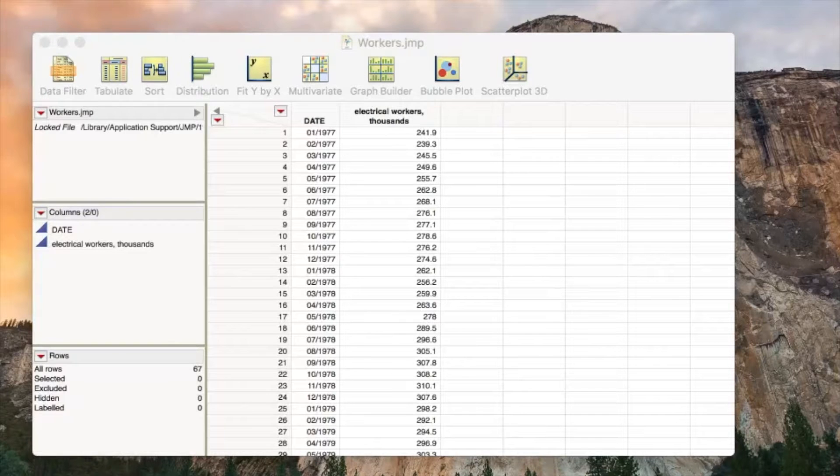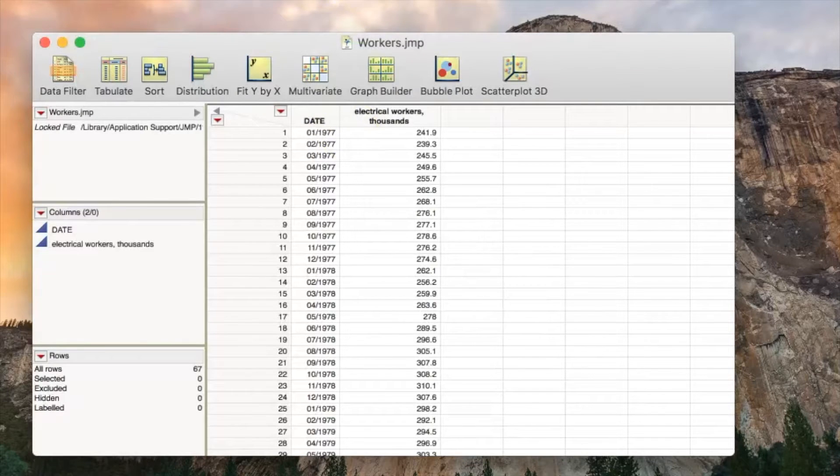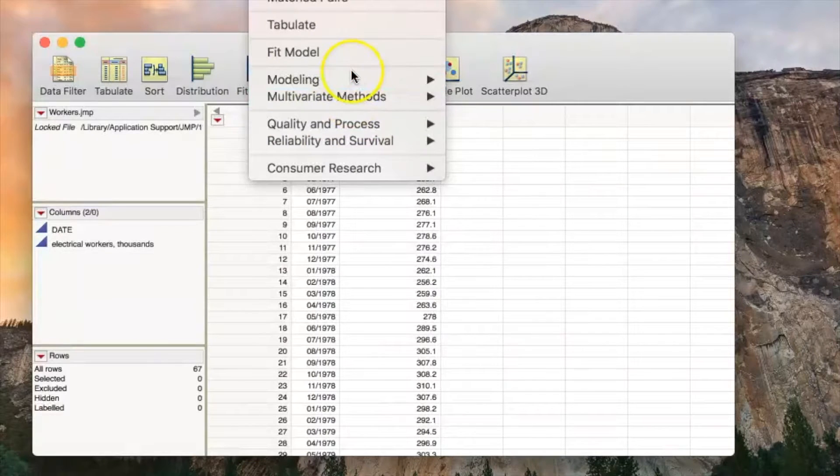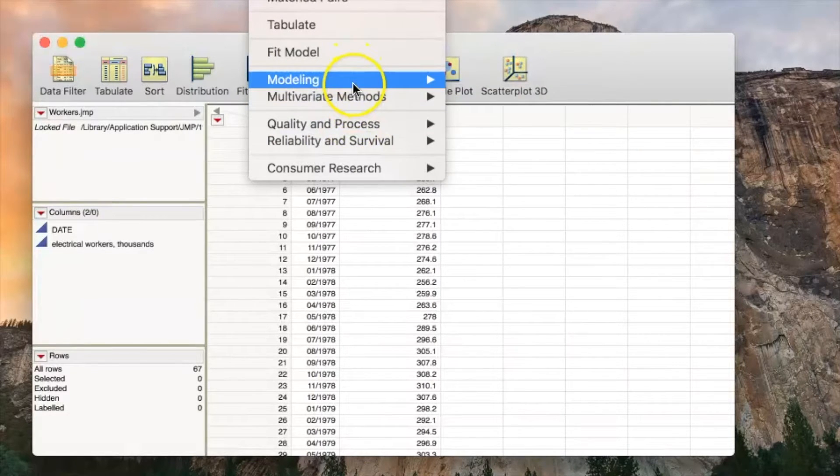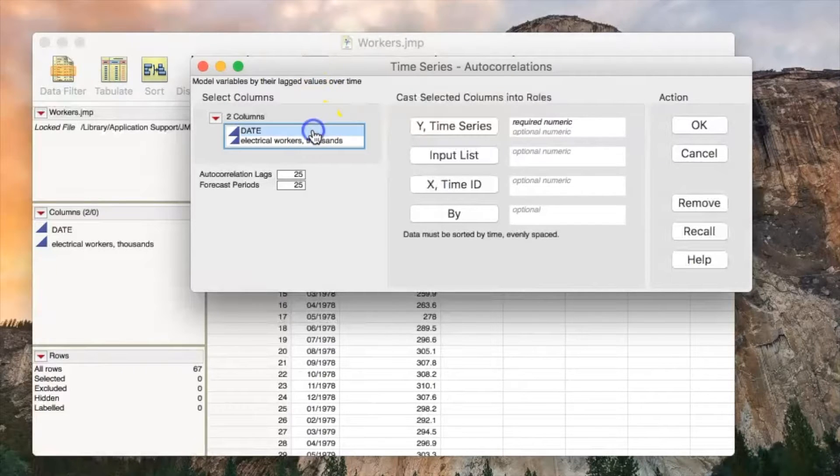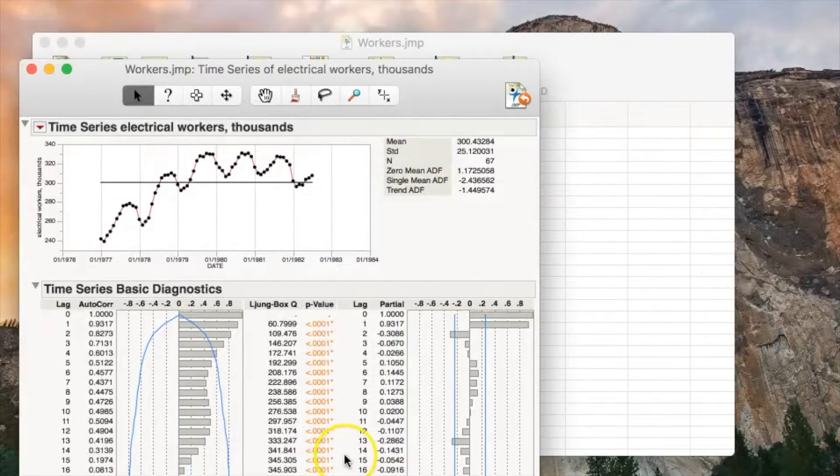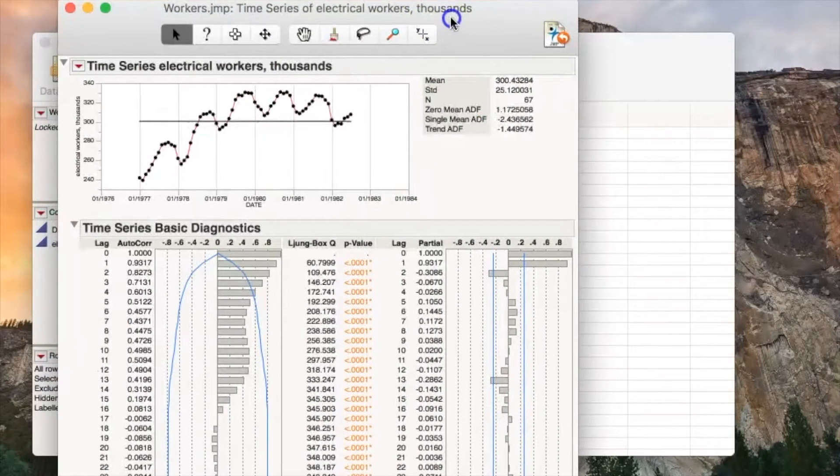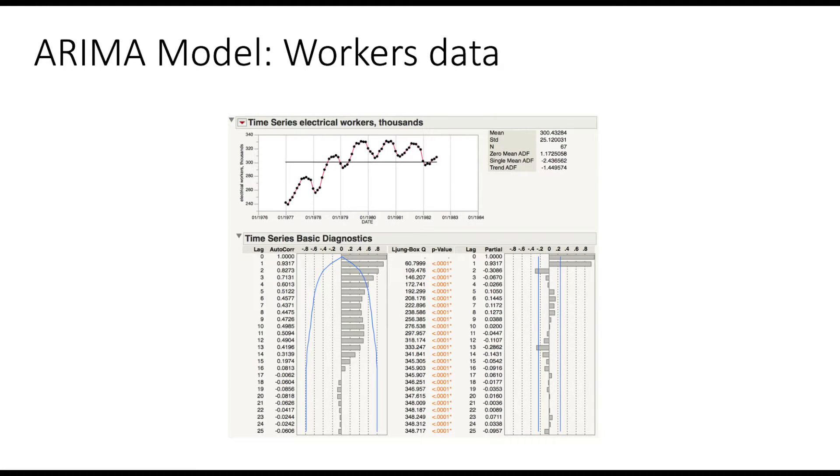In order to create an ARIMA in JMP, select Analyze, Specialized Modeling, and Time Series, choosing a continuous variable for Y and selecting the time for X. The data must be equally separated in time. For example, if two points were taken an hour apart, all data points must also be taken an hour apart. This model will be used to forecast.